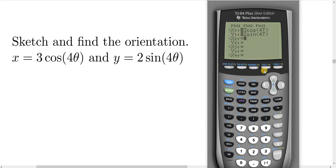Once you have that typed in, go to Window. You'll notice Tmin goes from 0 to 6.283185, which is 2π. The T step here is π/24.